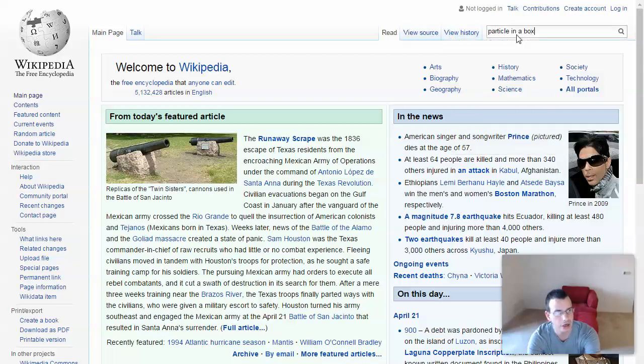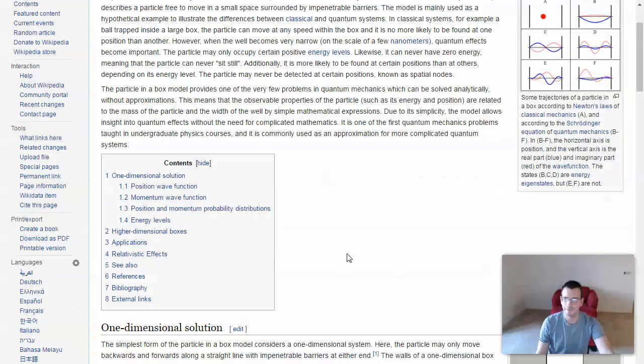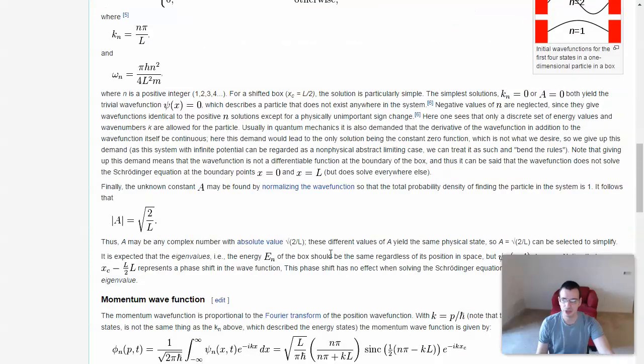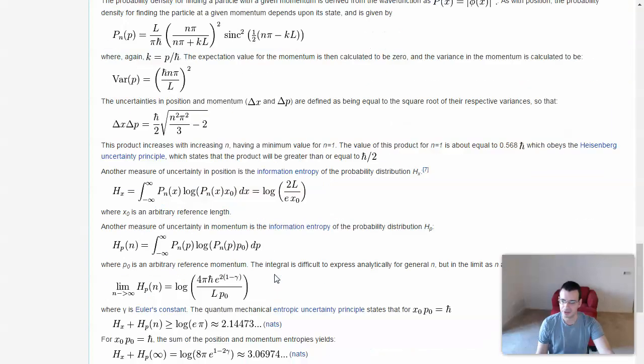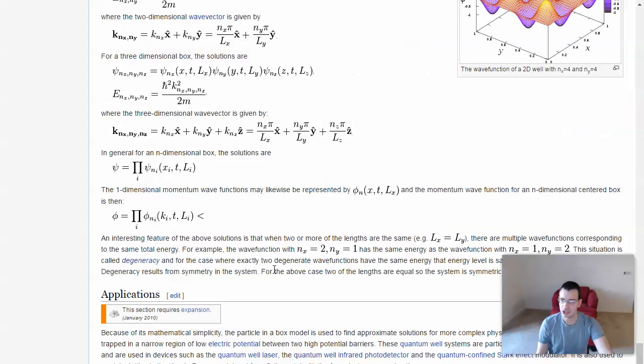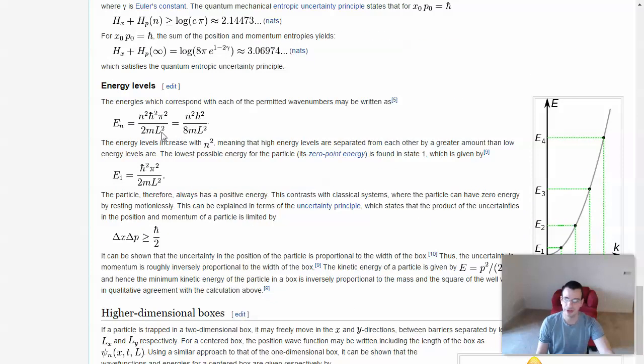Particle in a box. Right here. Nice. So there's a whole bunch of data. This is actually probably reasonably important to know, but not for this class. I would recommend just memorizing the equation and moving on. Right here, energy levels. This is the guy we want.